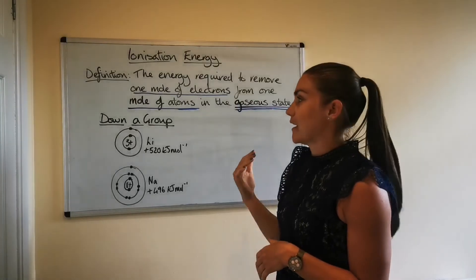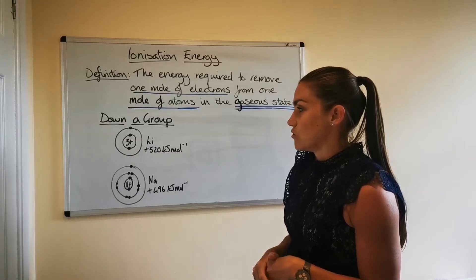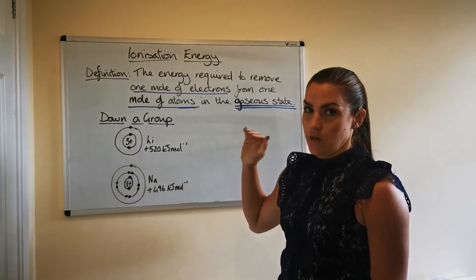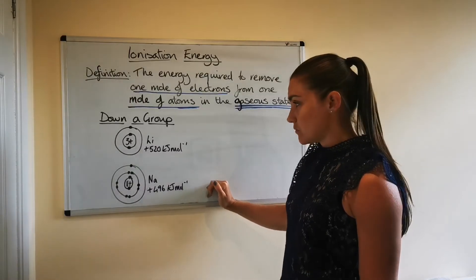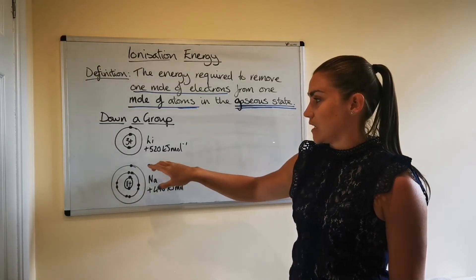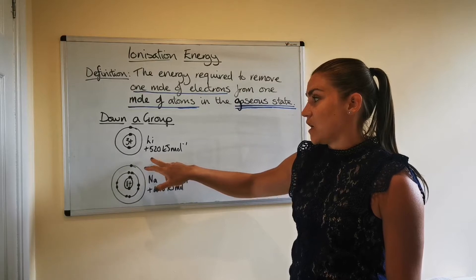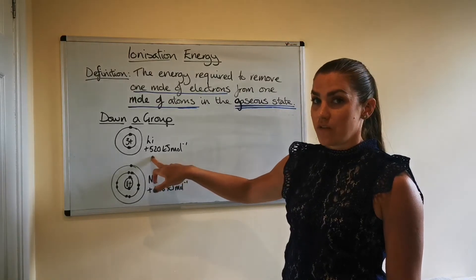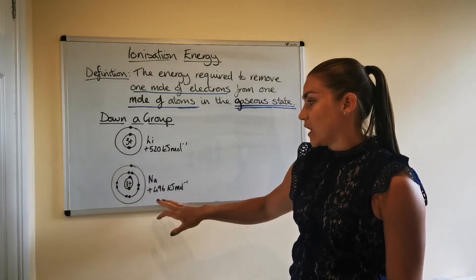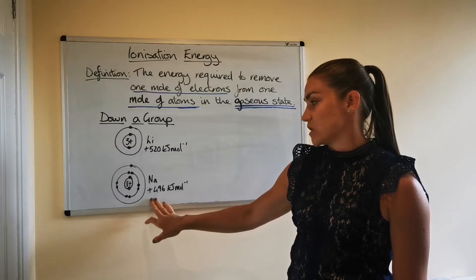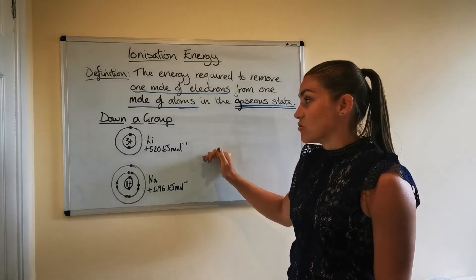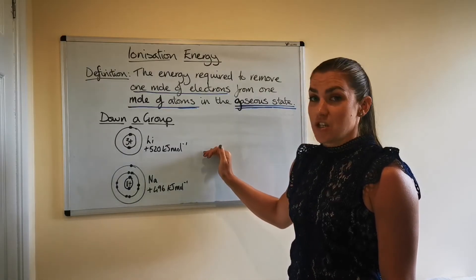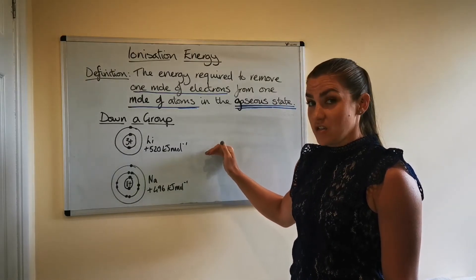So now we're going to look at the pattern going down a group. So I've picked lithium and sodium. So they're in period two and period three of group one. So out of the data book clip, the first ionization energies you'll get for lithium is 520 kilojoules per mole. And for sodium is 496 kilojoules per mole. So from this, we can see that as you go down a group, the ionization energy, or the first ionization energy decreases.